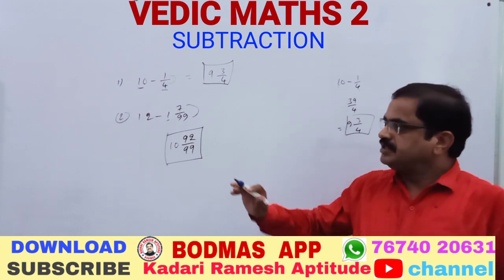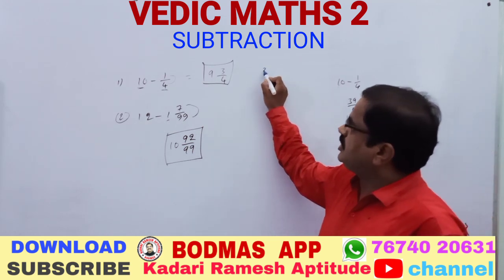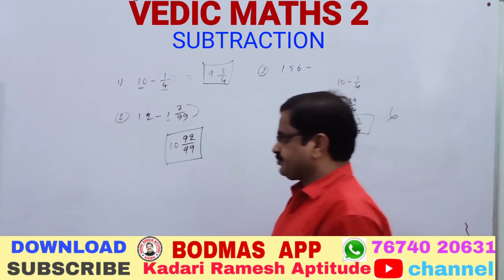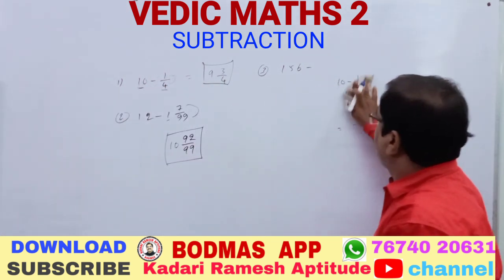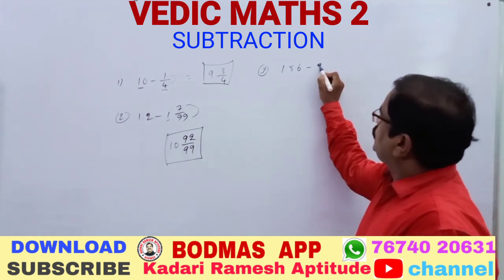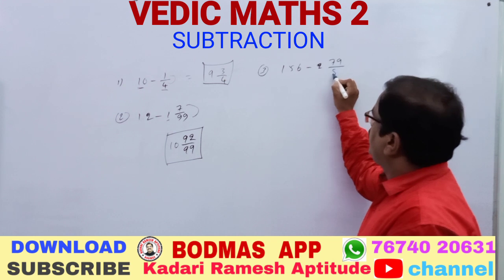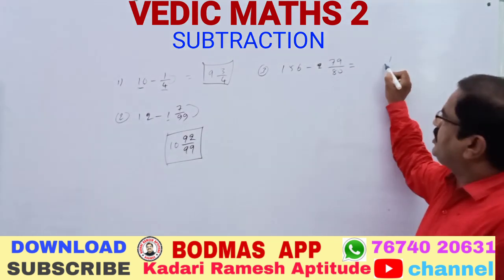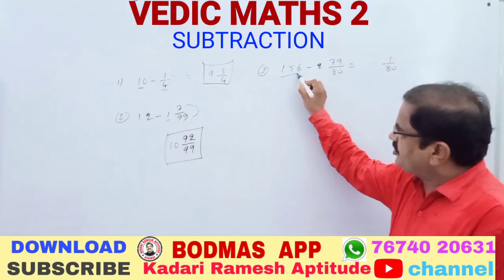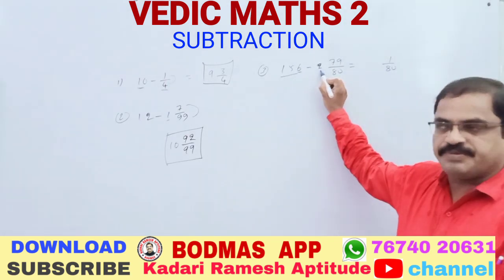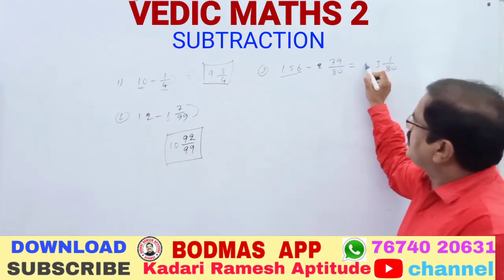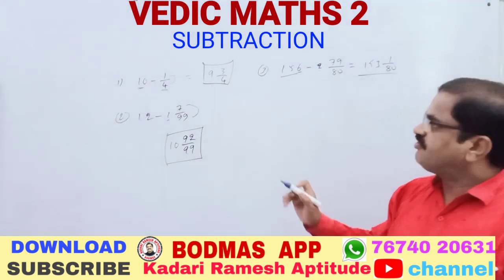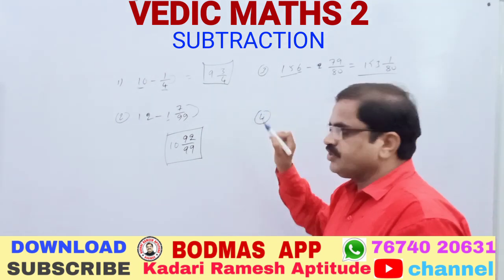Question number 3: 156 minus 279/80. Here also the method is simple. What is the difference between 80 and 79? The difference is 1, so write 1/80. Then from 156, subtract 2 (the whole number part) to get 154, and subtract 1 more giving 153. So the answer is 153 and 1/80.